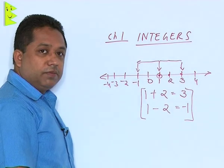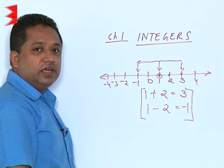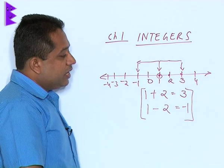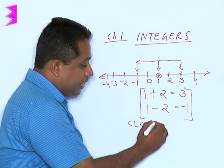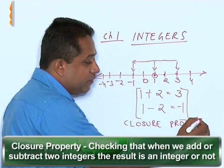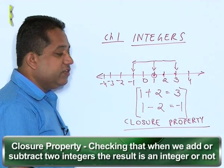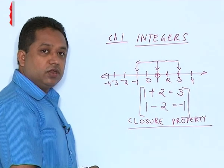Now let us look at some properties of addition and subtraction of integers. When we look at the closure property, what is the closure property? In the closure property, we are going to check whether when we add two integers, the result is an integer or not, and when we subtract two integers, is it an integer or not. So is a plus b an integer?